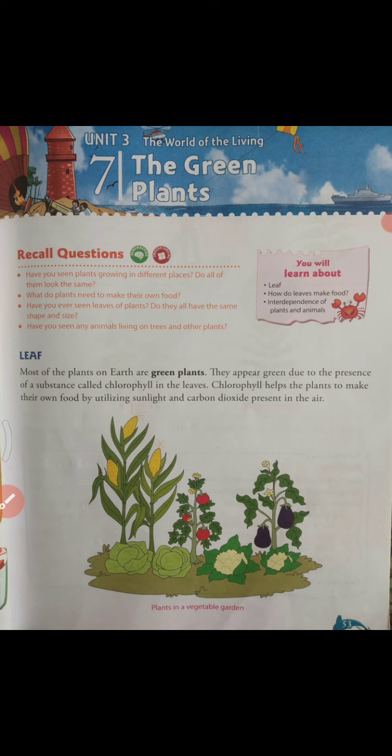As you all know, plants are very important to us. We are directly dependent on plants for food, for oxygen, and plants give us many useful things like wax, gum, wood, and medicines. So children, plants are very very important to us. In this chapter you will learn about the leaf, how leaves make food, and the interdependence of plants and animals.